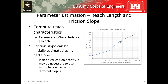Both reach length and friction slope can be estimated directly within HEC-HMS if you have associated the terrain dataset with your basin model and your reaches are geo-referenced. When estimating an initial friction slope, I usually equate it to the bed slope. However, if the slope is expected to vary significantly, it may be necessary to use multiple reaches with different slopes instead of just one. This is the case for the image to the right — three different reaches, each with different slopes, are likely most appropriate for this case.